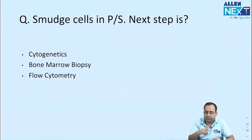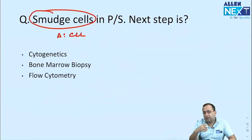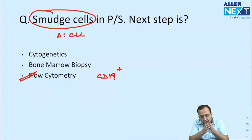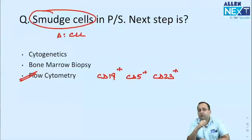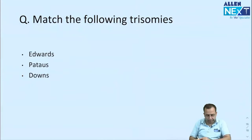Smudge cells on peripheral smear — a feature of CLL (chronic lymphocytic leukemia), same as last year's NEET PG question. Seeing smudge cells, what is the next step? Flow cytometry. CLL markers: CD19 positive, CD5 positive, CD23 positive. So the next step is flow cytometry.